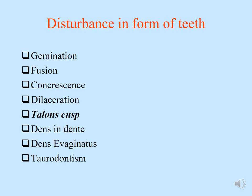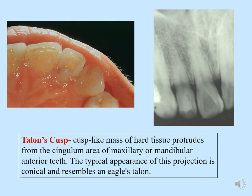The next disturbance in form is talon cusp. Talon cusp is commonly seen in maxillary and mandibular anterior teeth. It is an extra cusp of hard tissue that protrudes from the cingulum area. The typical appearance of this projection is conical, resembling an eagle's talon or claw — that is the reason it is called talon cusp.